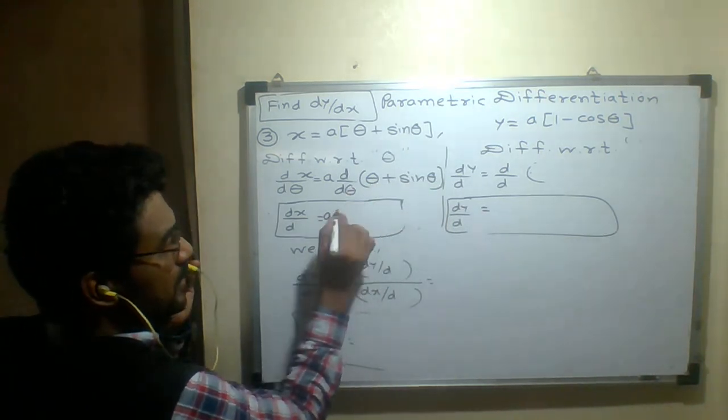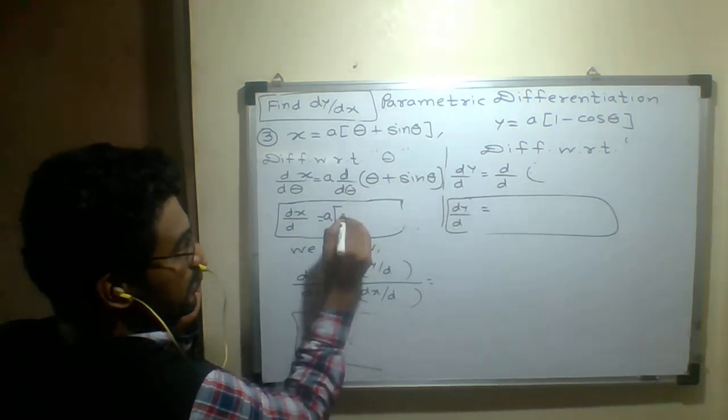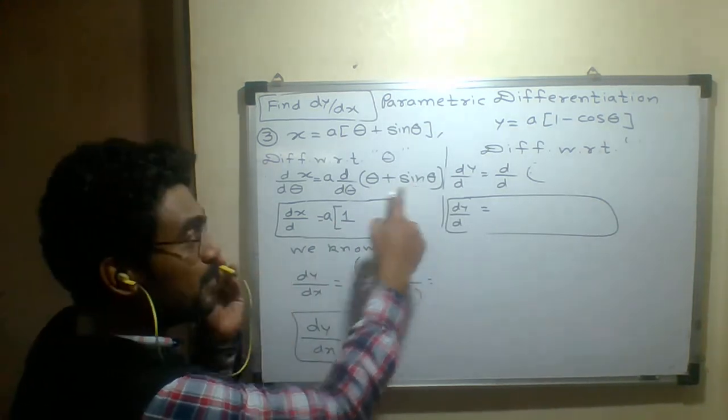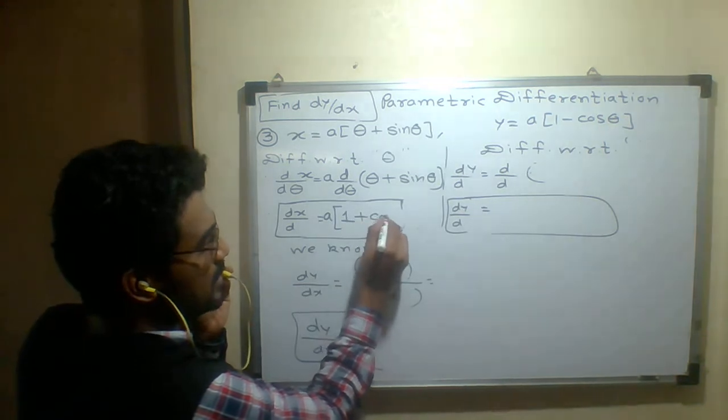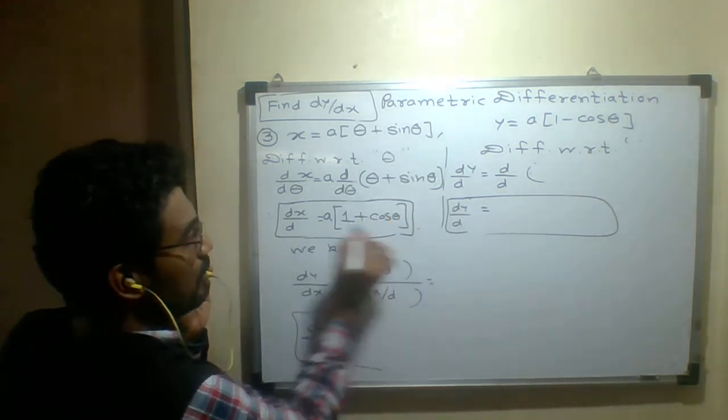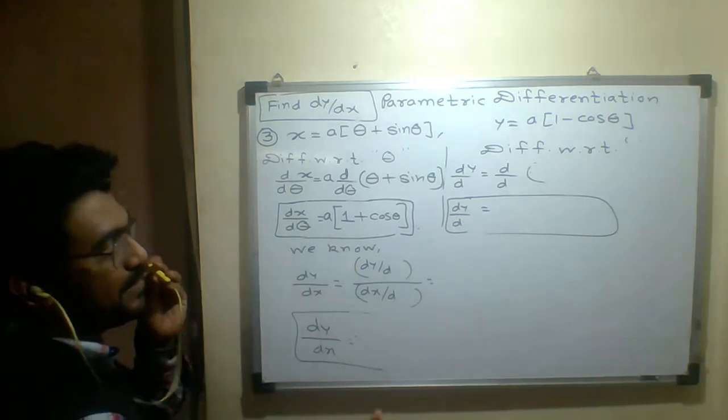a is constant. What is the derivative of θ with respect to θ? It's 1. What is the derivative of sin θ with respect to θ? It's cos θ. Now my answer is in terms of θ, the parameter.